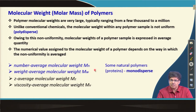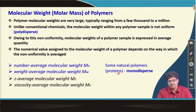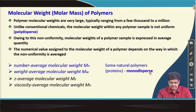Almost every synthetic polymer is polydispersed in nature. There are some exceptions in the case of natural polymers like proteins, where in a protein sample all the macromolecular chains have the same molecular weight.